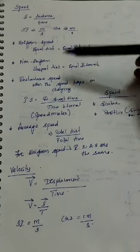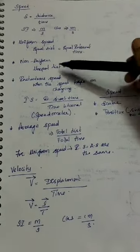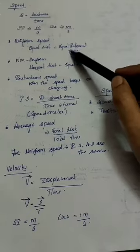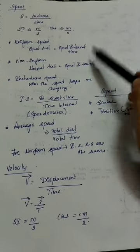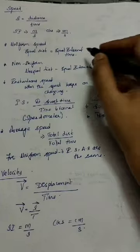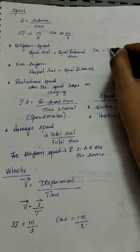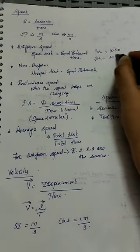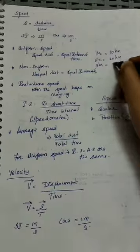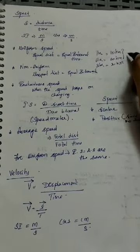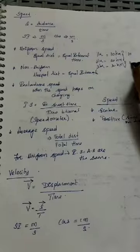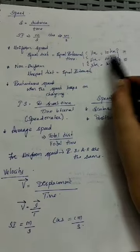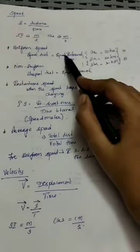There are four types of speed: uniform, non-uniform, instantaneous, and average. Uniform speed means an object covers equal distance in equal intervals of time. For example, if I travel 10 kilometers every hour — 10 km in the first hour, 20 km in the second, 30 km in the third — the difference is always 10, so that is uniform speed.